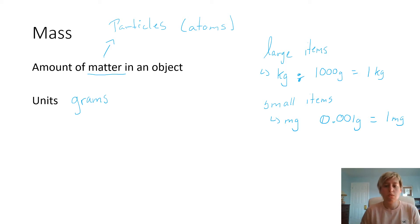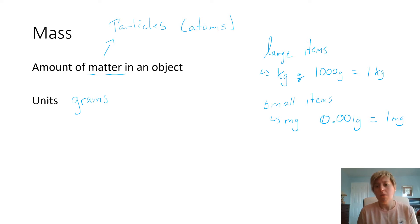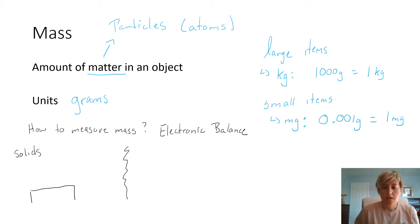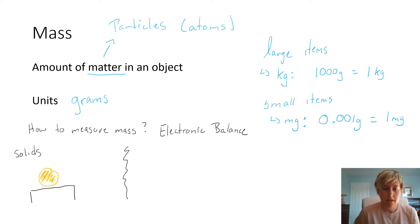To measure mass, we use an electronic balance. For solids, it's really simple — I just take my item and put it on the balance. For example, if I take an orange and put it on my electronic balance, the readout screen tells me the mass. In this case, it is 1 gram.